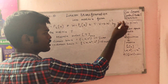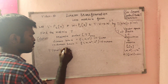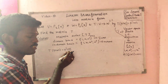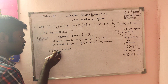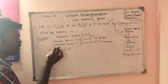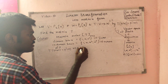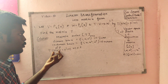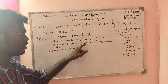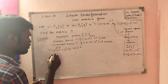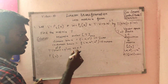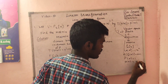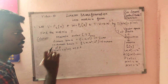T of P of x gives us input from the domain and output in the codomain. We have 3 inputs from the domain: P of x equal to 1, P of x equal to x, and P of x equal to x². We get outputs in 4 dimensions. So T of P of x maps 3 inputs to 4-dimensional outputs.